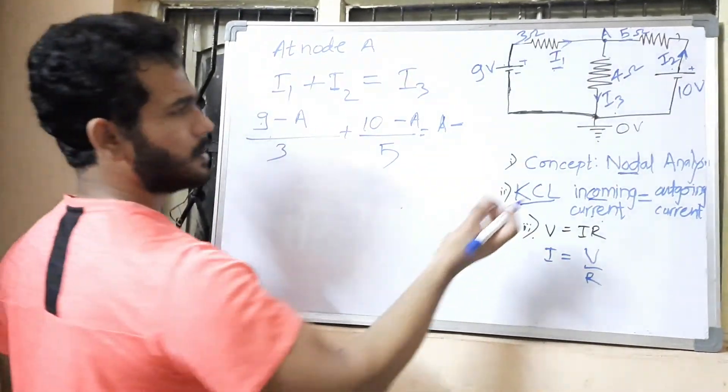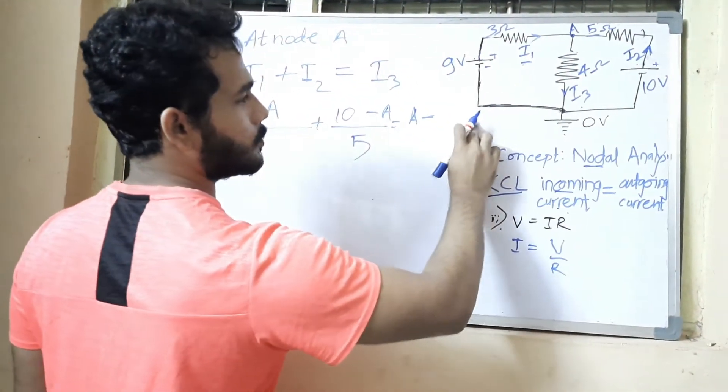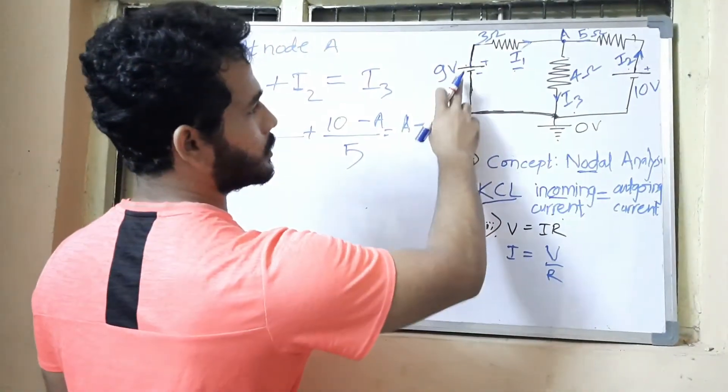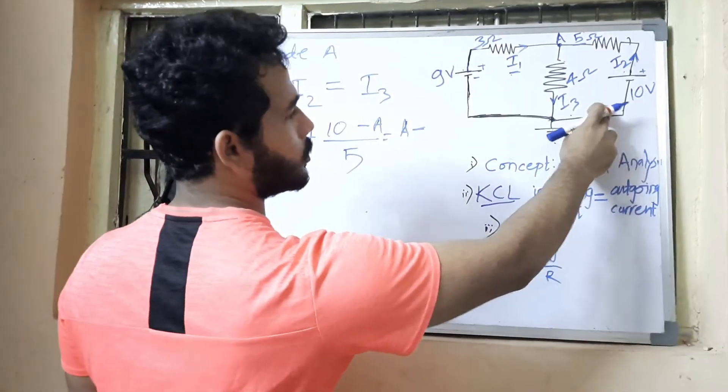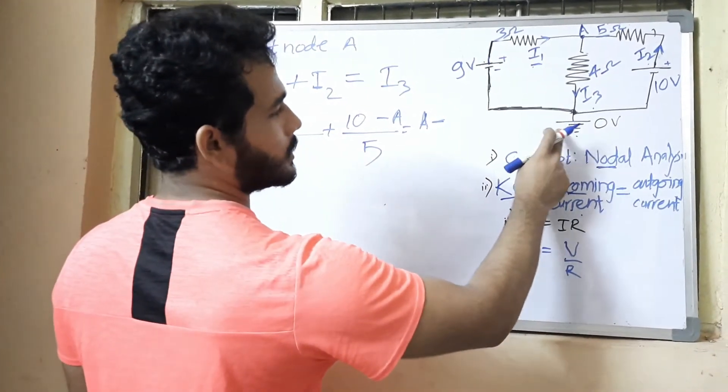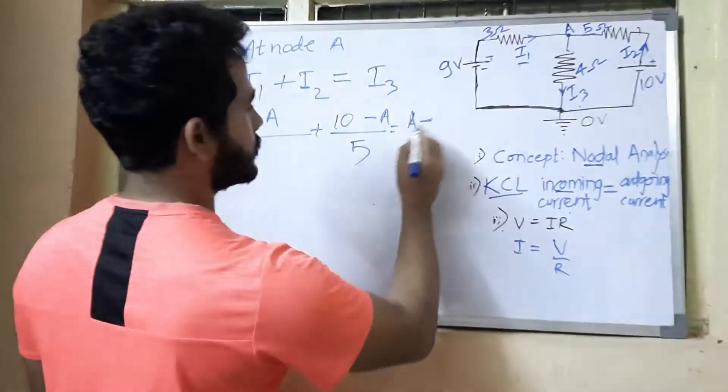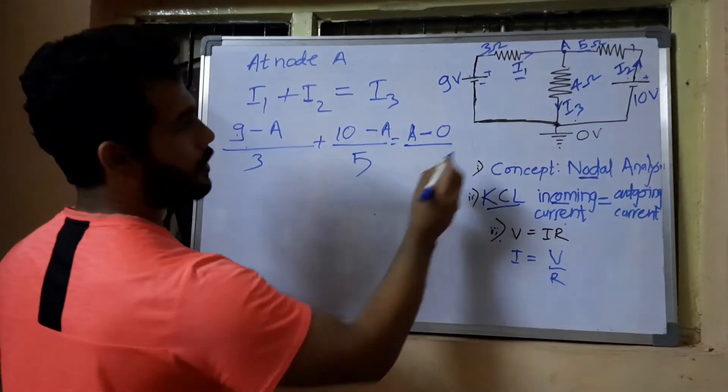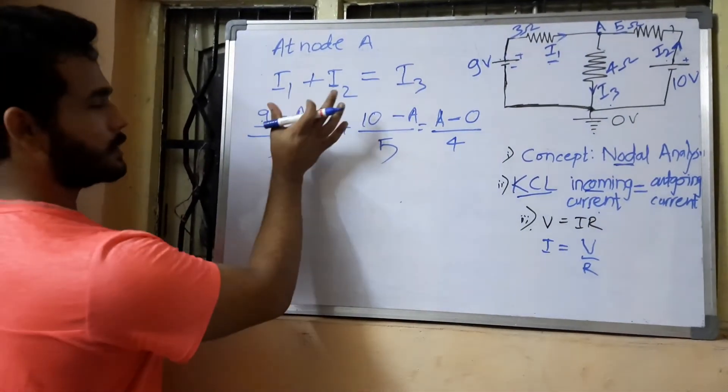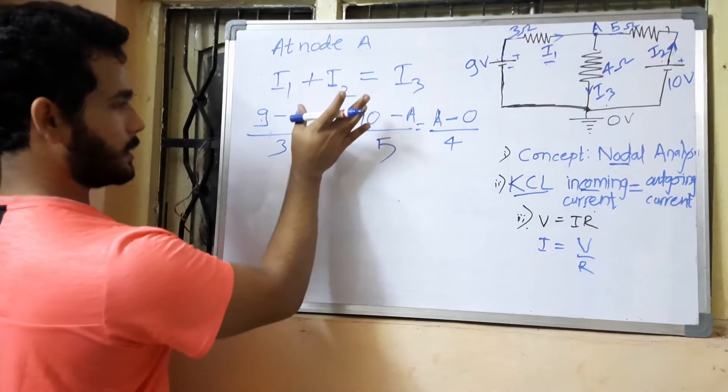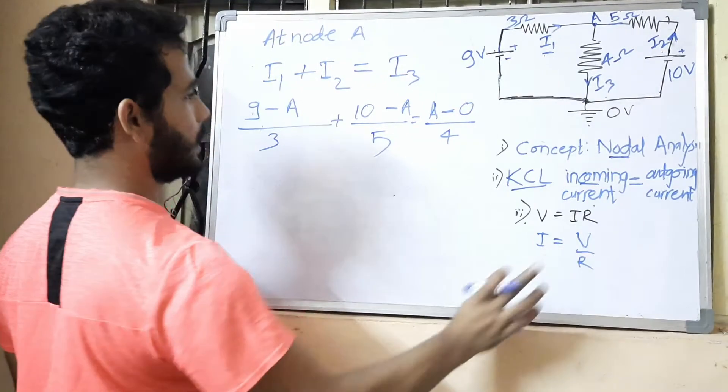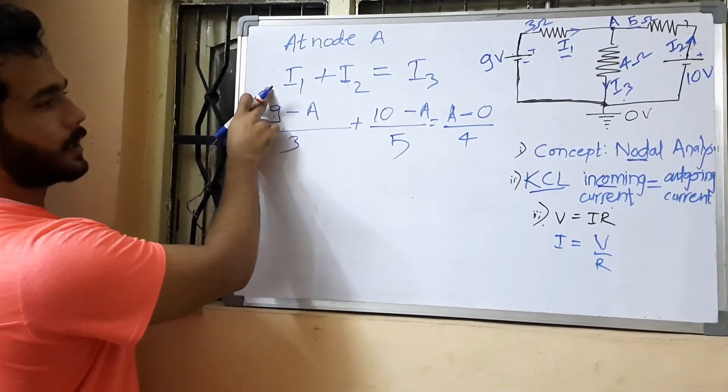We have considered one simple node, or most probably you can take this 0 volt node as a ground, and it should be connected to the negative plate from both sides. It will be easy for further calculations. So minus 0 by 4. I have just converted this equation and elaborated it in this form. It is based on i equals V by R and this is based on Kirchhoff's Current Law.